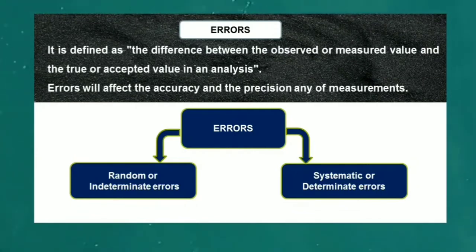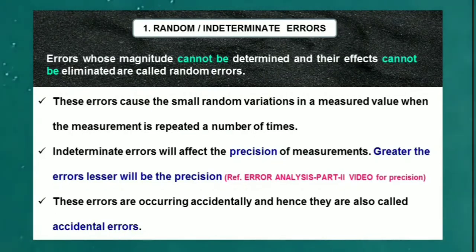Errors will affect the accuracy and the precision of measurements. They are mainly classified into two types: the first one is random or indeterminate errors, the second one is systematic or determinate errors.